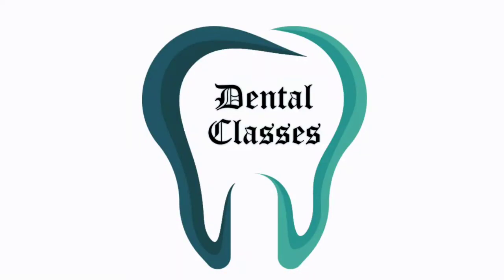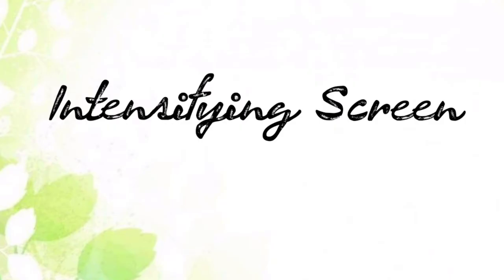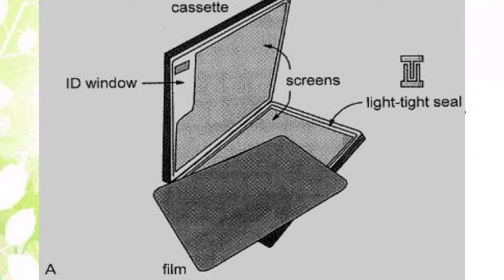Today we'll discuss a new topic: intensifying screens. They are used in pairs and are positioned on either side of a double emulsion film. They are used in the case of extra-oral films, which are referred to as screen films or indirect films, as the film is placed in between two intensifying screens, as shown in the image.